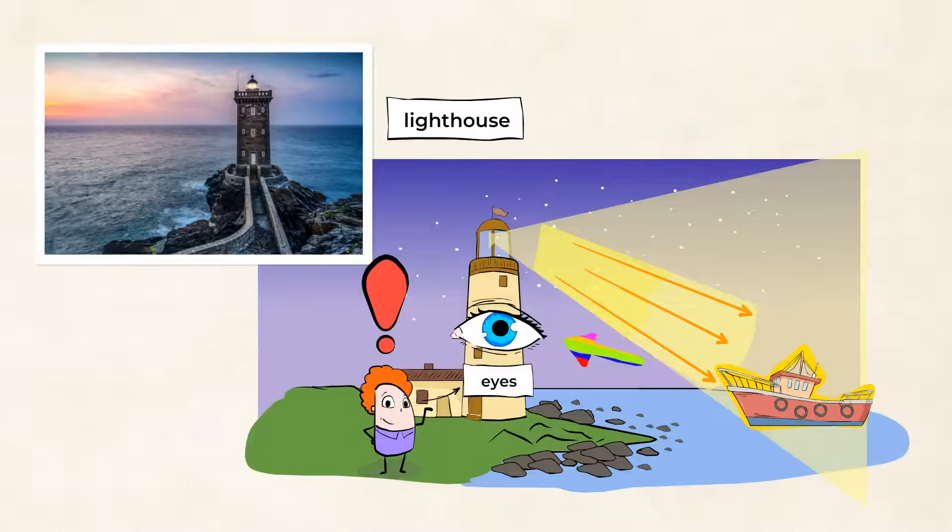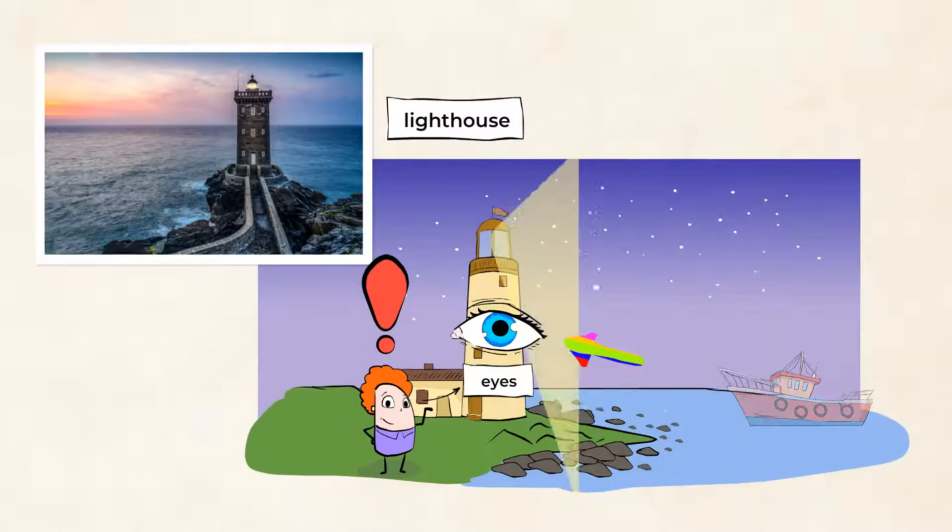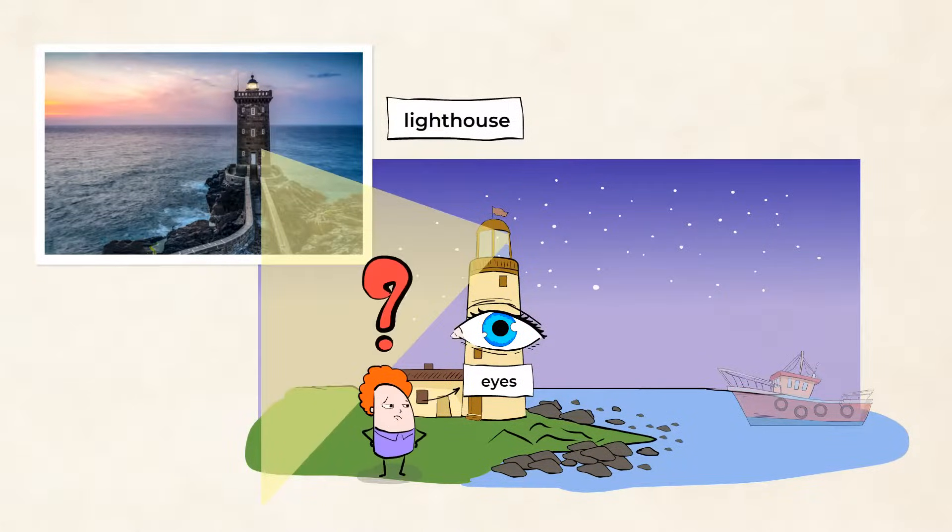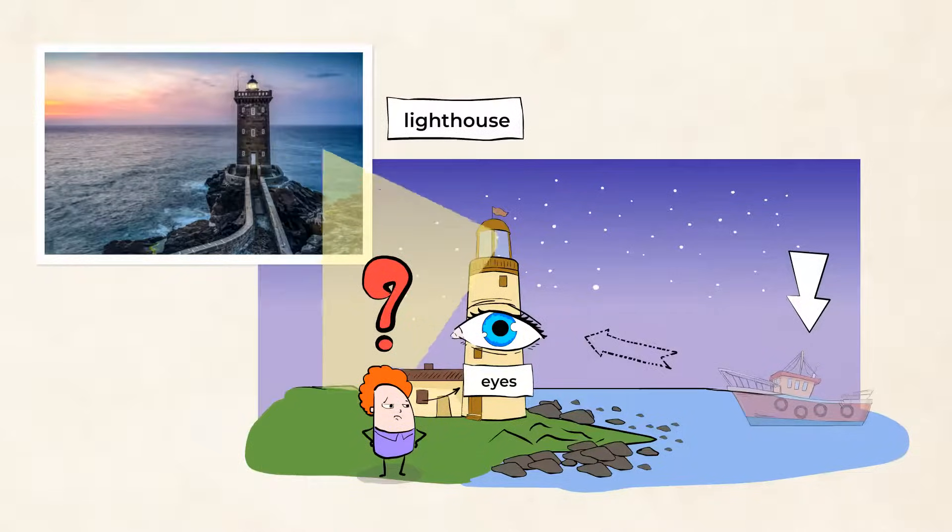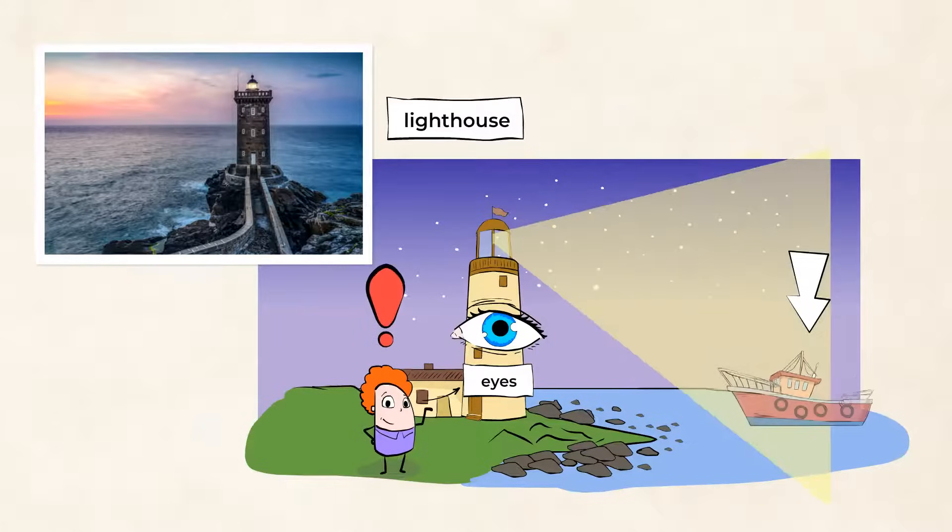As the light rotates, the boat seems to disappear. Why can't we see the boat once the light from the lighthouse continues to rotate? Because there's no longer any light reflecting off of the boat and into our eyes. The boat is still there on the water, but without any light reflecting off of it, we can't see it. And when the lighthouse light rotates back around, we can see the boat once again.